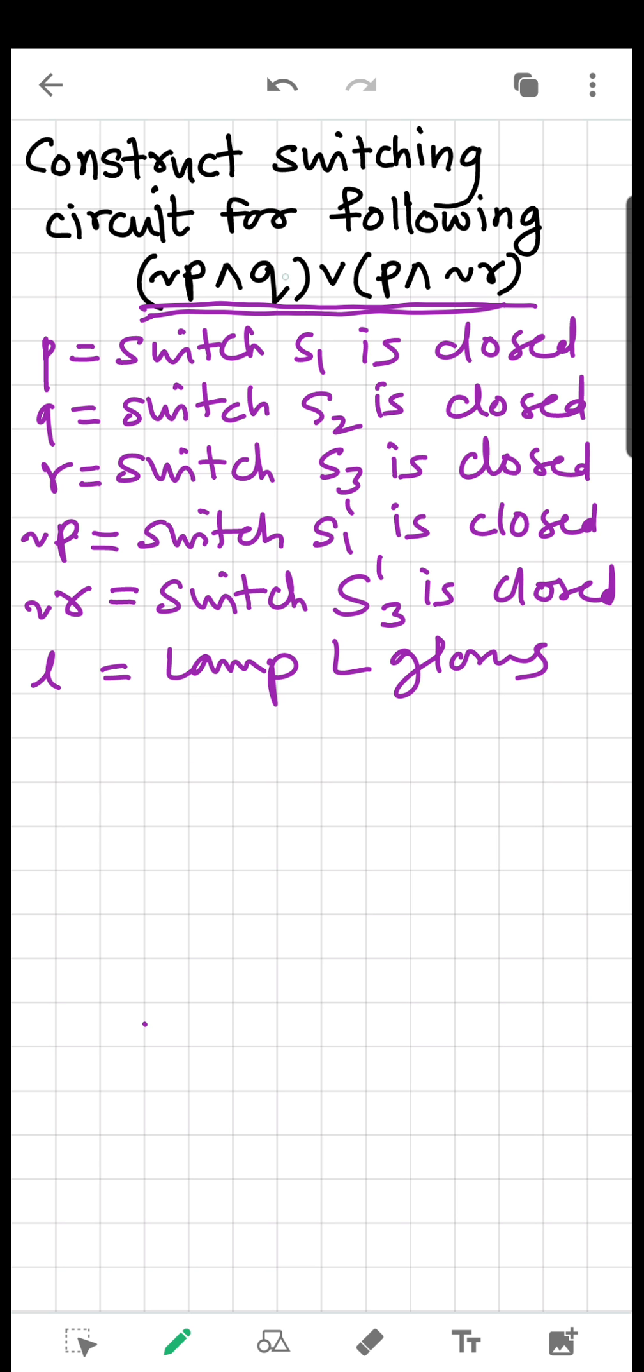So simply speaking we have OR so we have two different things which are in parallel, but in each of the bracket there are two switches or two statements which are with AND so that is series.